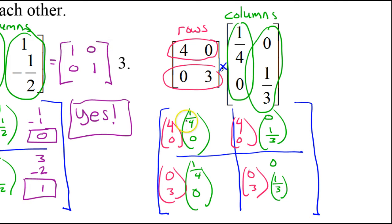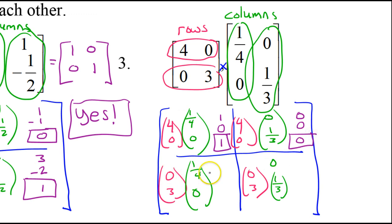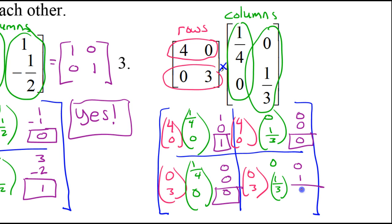Finally, I multiply and add. Multiplying these together, I get 1 and 0; add them up, I've got 1. Multiplying here, I get 0 and 0; together they make 0. Here I multiply and get 0 and 0; add them up, you get 0. Multiplying here, I get 0 and 1; add them up and I get 1.